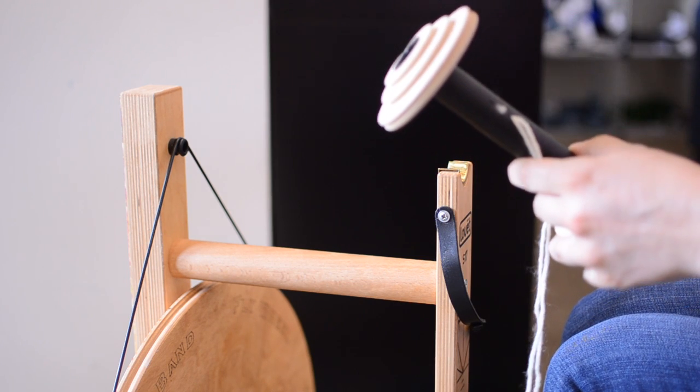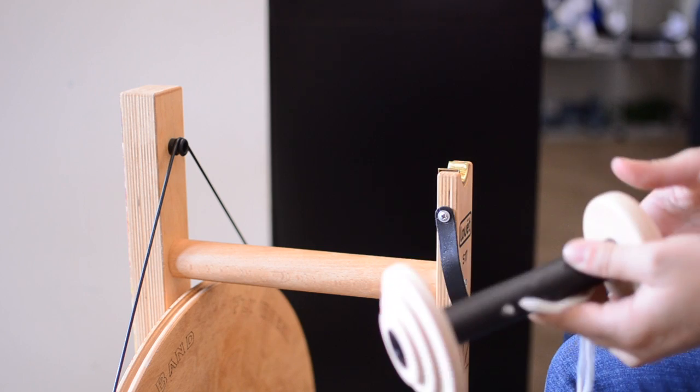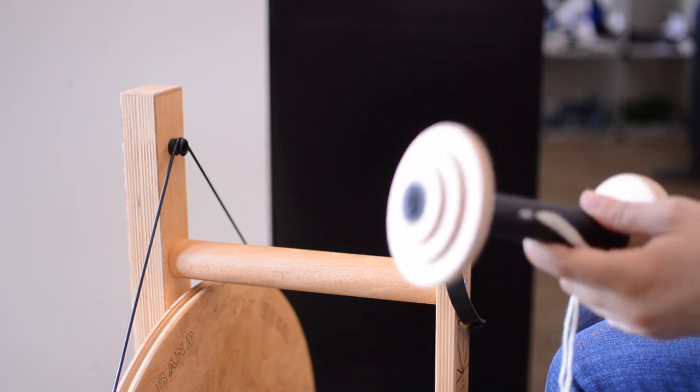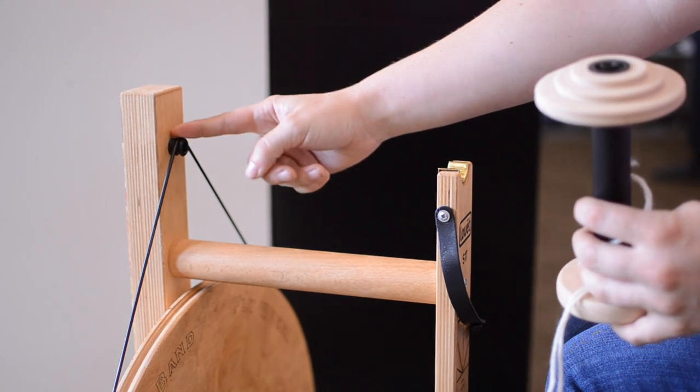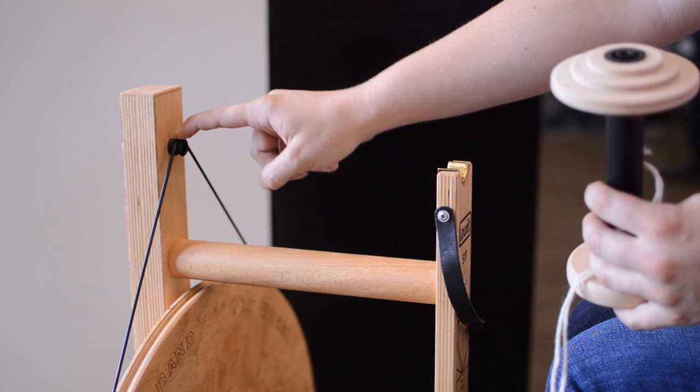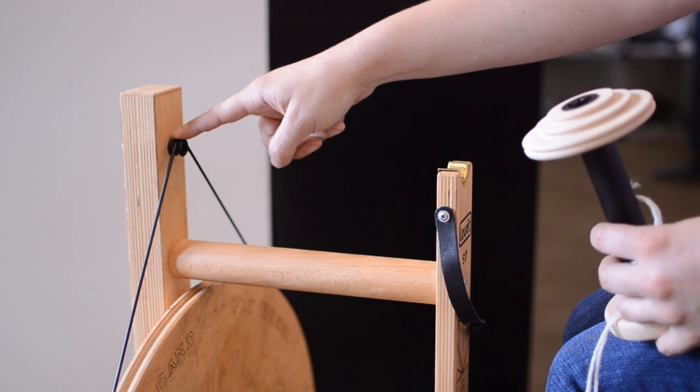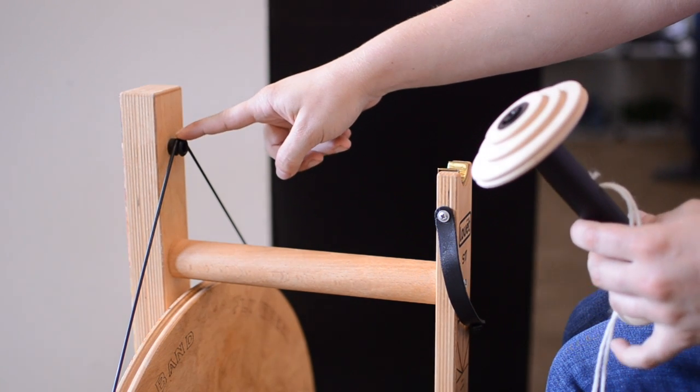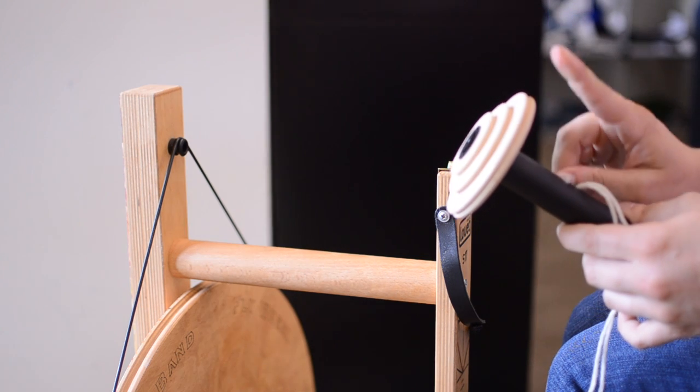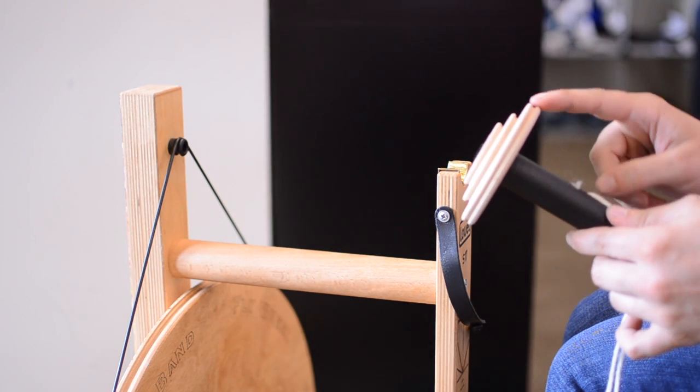That is really nice compared to some of the other wheels that I've used. You'll also notice, as I took off the flyer and the bobbin, the drive band stayed back here on this black knob. That's the rest position for the drive band. You always want to put the drive band back when you're done spinning, because leaving it over the whorl on the bobbin can let it get too stretched out, and it won't work well.